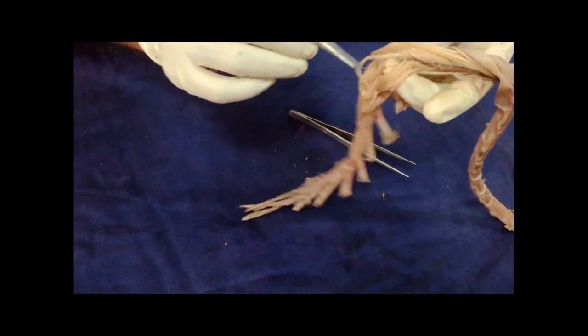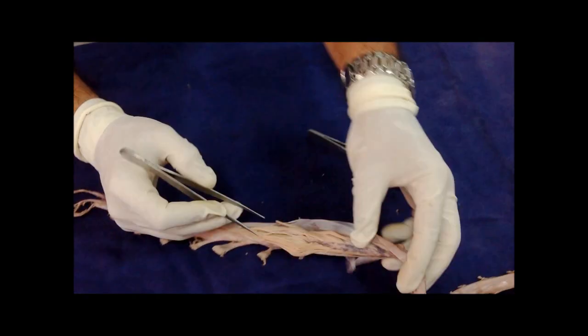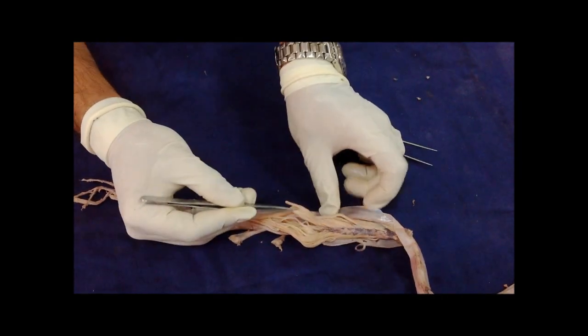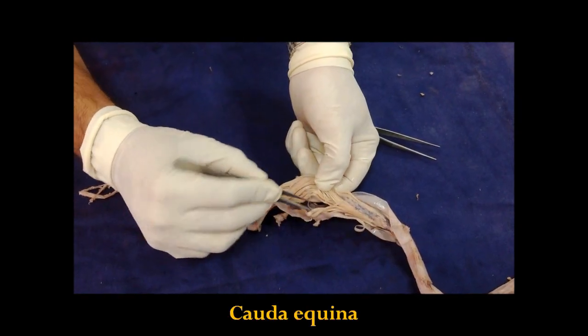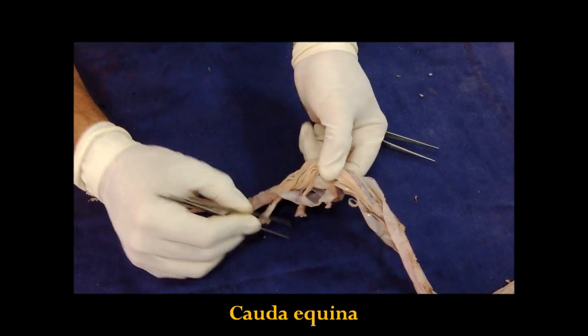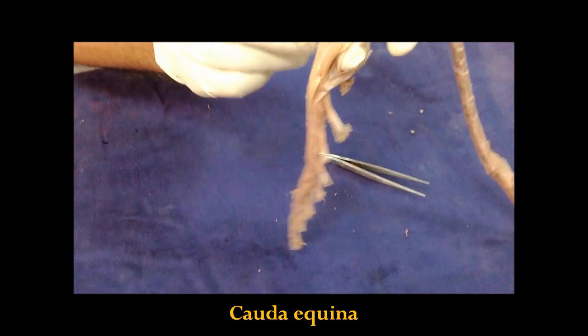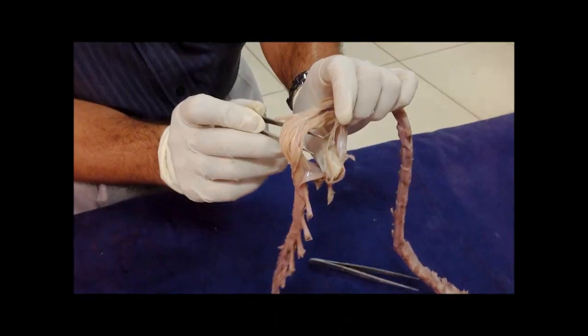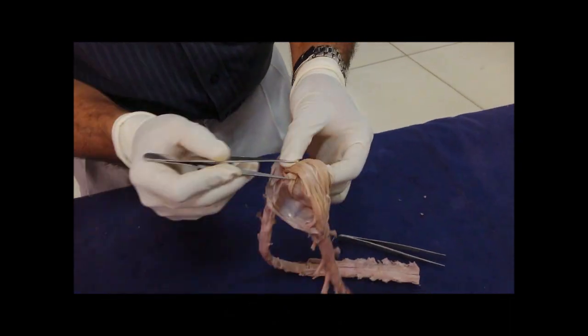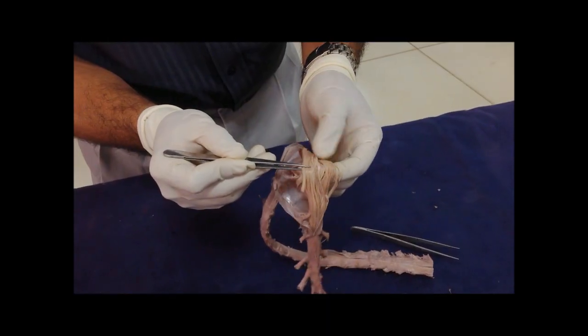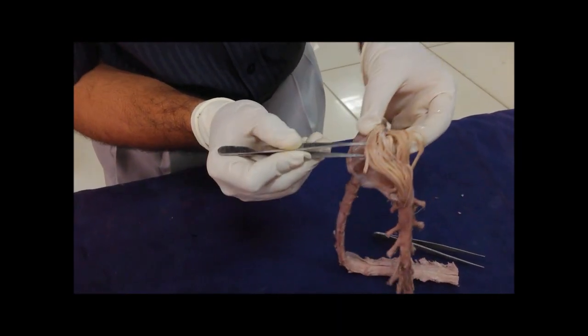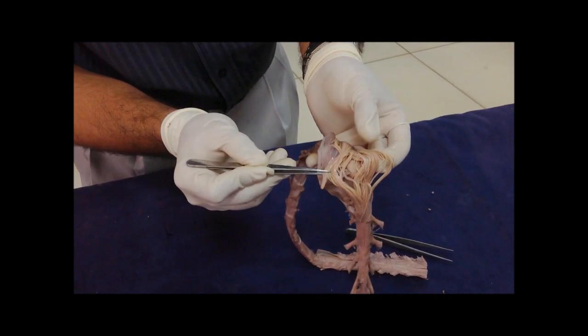And surrounding filum terminale here we have a bunch of nerves, collectively called cauda equina since they resemble the tail of a horse. It is the cauda equina. It is made up of lumbar, sacral, and coccygeal spinal nerves.